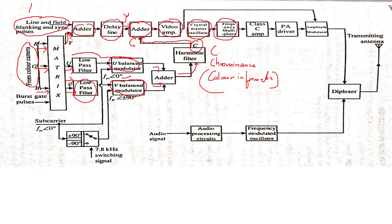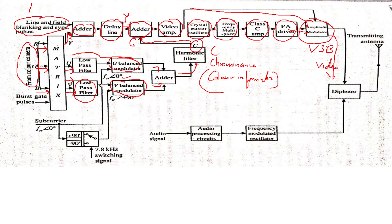The composite video signal is amplified and fed to an amplitude modulator. The carrier is generated, multiplied in frequency, amplified through a Class C amplifier, and then a power amplifier. Amplitude modulation takes place using vestigial sideband transmission — a complete upper sideband and part of the lower sideband — producing the video signal for the combining network. On the other side, the audio signal from the microphone goes through audio processing circuits, is frequency modulated, and becomes the sound signal.